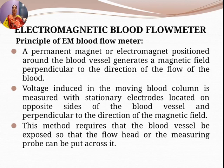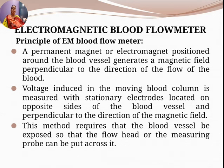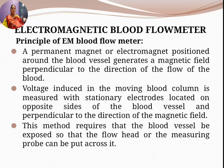The voltage induced in the moving blood column is measured with stationary electrodes located on opposite sides of the blood vessel, perpendicular to the direction of the magnetic field. This method requires the blood vessel to be exposed so that the flow head or measuring probe can be placed across it — making it an invasive method. Because of blood movement through the vessel, an EMF is induced perpendicular to the direction of the magnetic field.